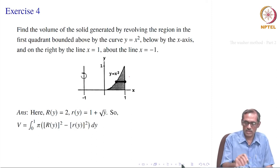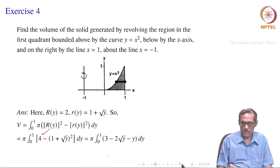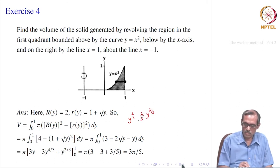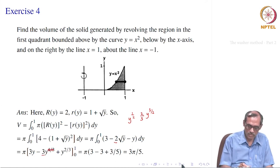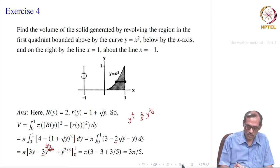Plugging into the washer formula, the volume is the integral from 0 to 1 of π times [R(y)² − r(y)²] dy, which gives 4 minus (1 plus root y)² expanded as 3 minus 2 root y minus y. We then integrate term by term.